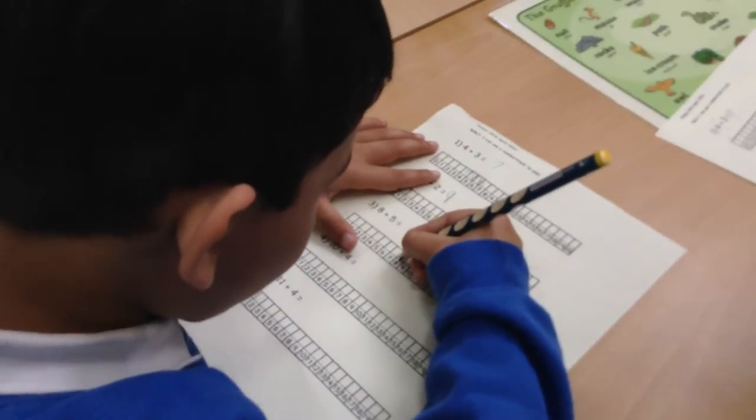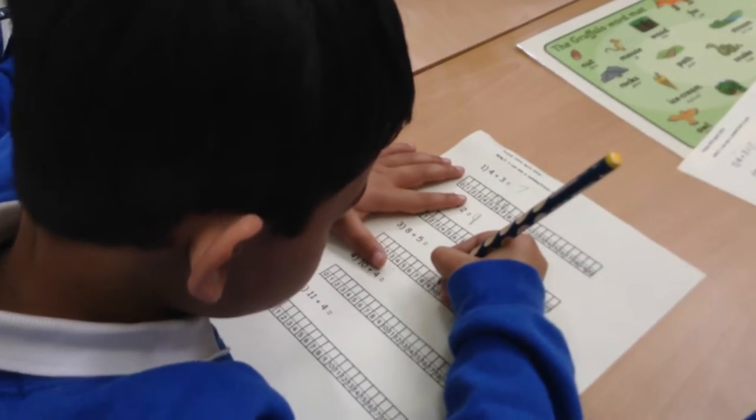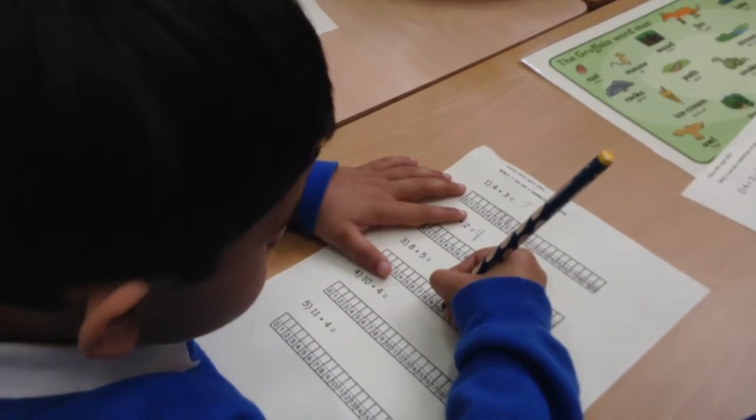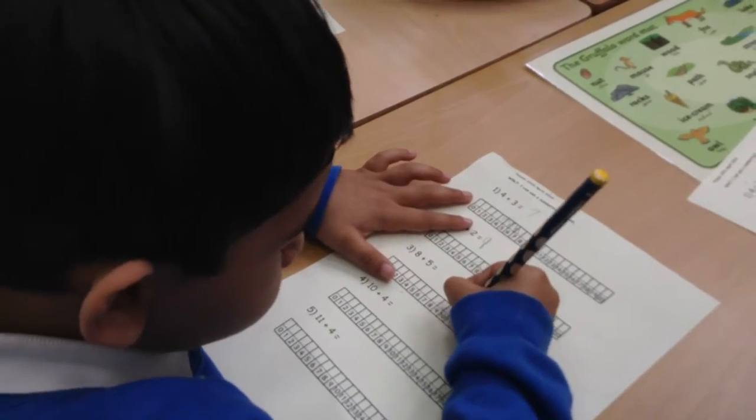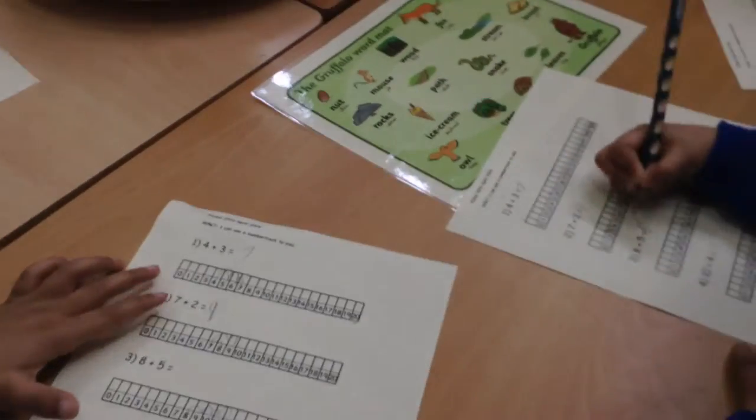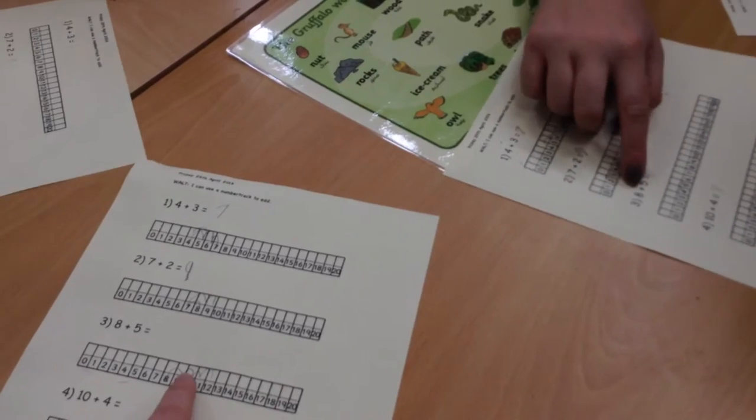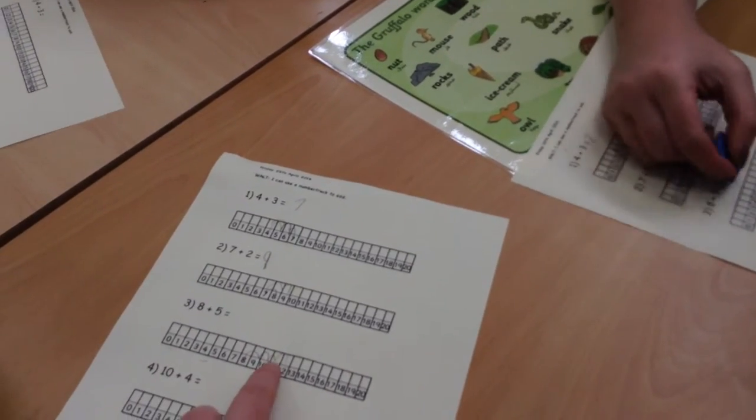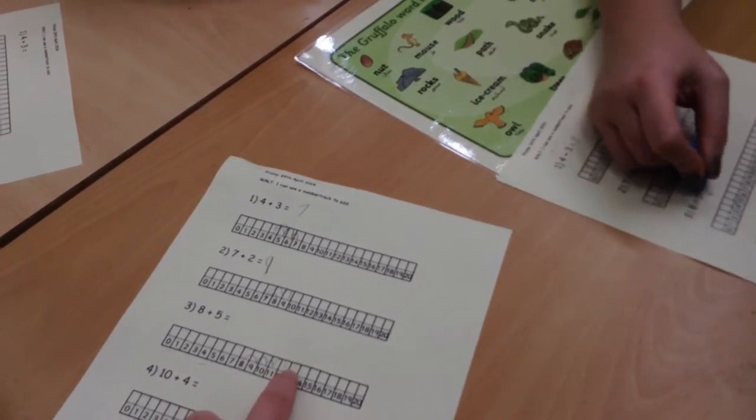You're adding five. Three, four, five. Come on, do the next one. Let's have a look. Well done. One, two, three, four, and one more, five.